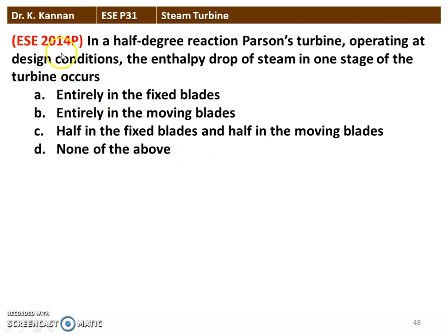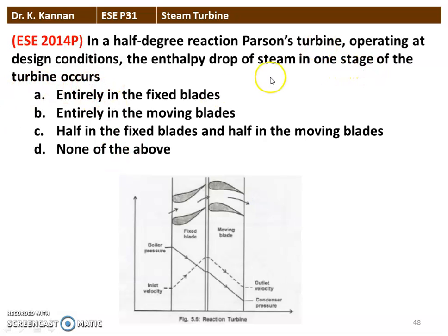Next question from the 2014 question paper — in a 50% reaction turbine operating at design condition, the enthalpy drop of the steam in one stage occurs as follows. In the 50% reaction turbine, 50% of the pressure drop occurs in the fixed blade and the remaining 50% in the moving blade. Option C is the answer.